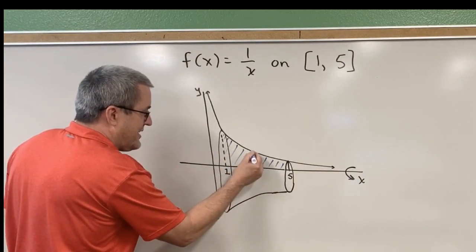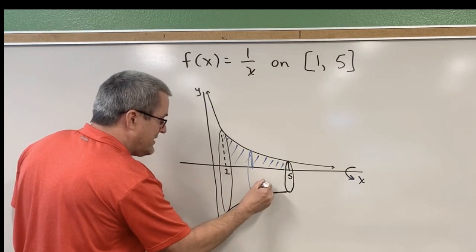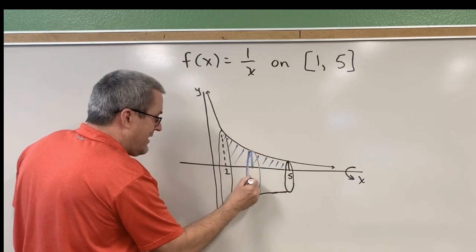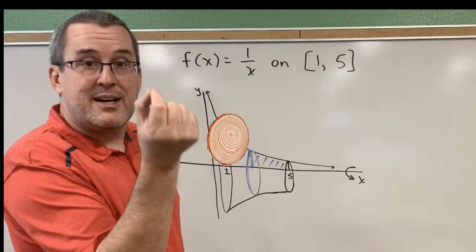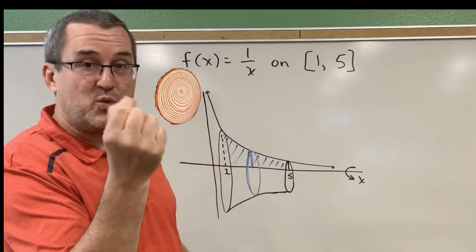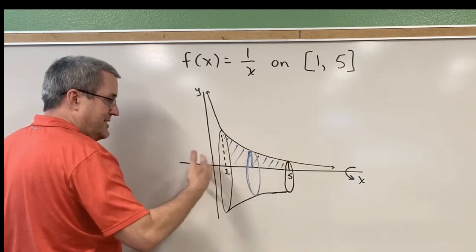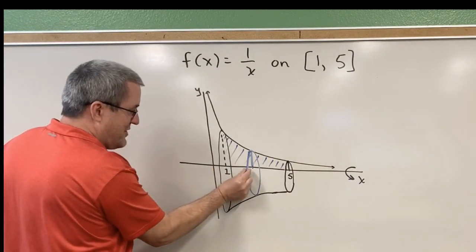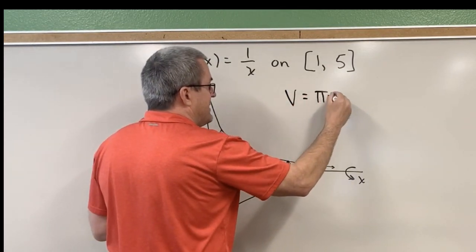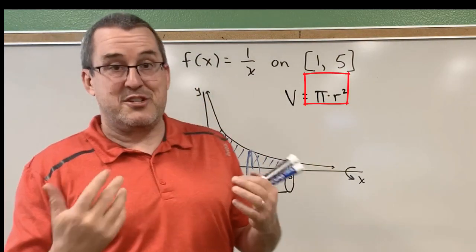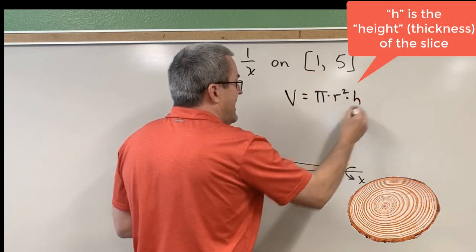Imagine if I was to slice this tree trunk just right here — what would that representative slice look like? If I cut this up into infinitely many, infinitesimally thin pieces, each one of those pieces would look like that blue, really thin disk — that blue, really short cylinder. This is just one of infinitely many; there are going to be many of those cylinders inside of this tree trunk. The volume of a cylinder is found by taking π times r². Pi r squared is the area of the circular base of that cylinder, and we multiply that by the height of the cylinder.